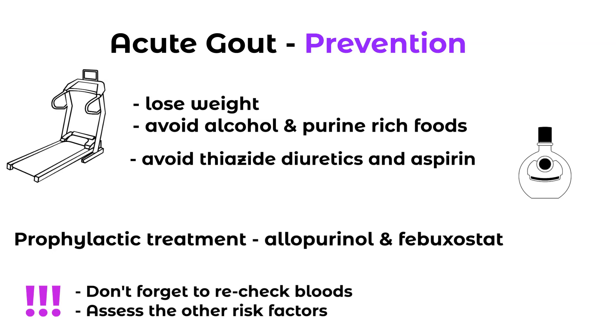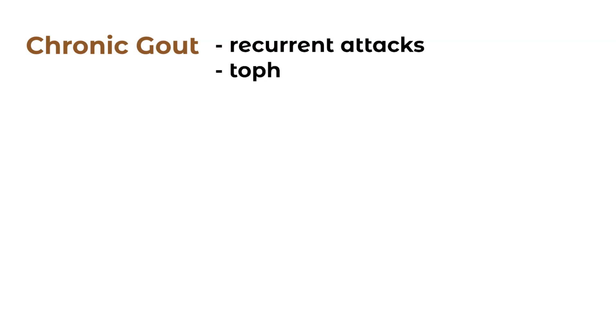The last thing to remember is to treat the individual and not just the gout. There can be associated issues going on with the patient — hypertension, diabetes, cardiovascular disease — so all these things we need to address and manage the patient as a whole. When it comes to chronic gout, there are recurrent attacks, tophus or urate deposits in the pinna, tendons, and joints, as well as joint damage. At this stage we're probably looking at referring to a rheumatologist.